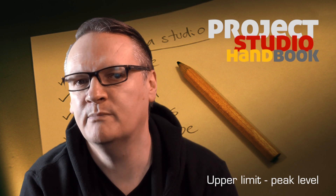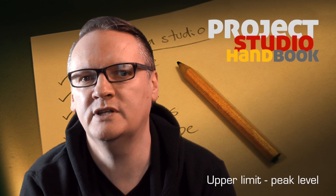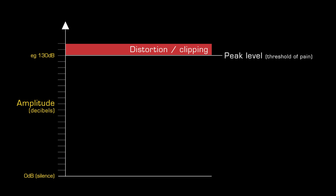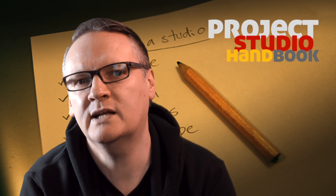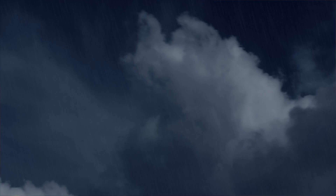When confronted by very loud sounds above 130 decibels, our auditory system is unable to cope. It simply has no way to represent them. Our hearing distorts and we may experience pain and short or long term hearing damage. We call 130 decibels the peak level, and above it is clipping and distortion.